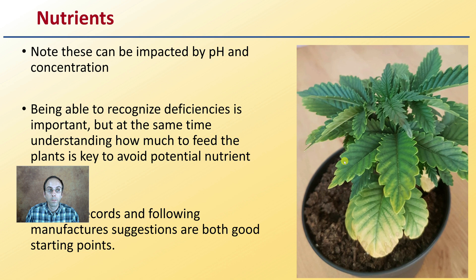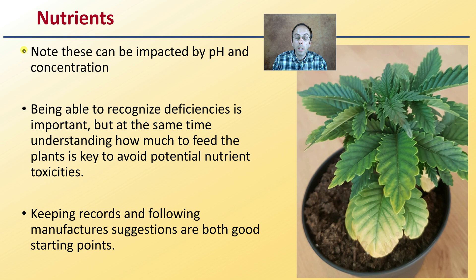Looking at nutrients, note that these can be impacted by pH as well as concentration. Being able to recognize deficiencies is important, but at the same time, understanding how much to feed the plant is key to avoid potential nutrient toxicities, which with cannabis tends to be more of an issue. Keeping records and following manufacturers' suggestions are both good starting points to ensure you're not going into the toxic or deficient range when it comes to nutrients.